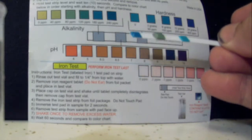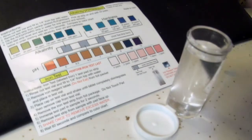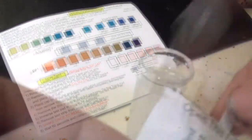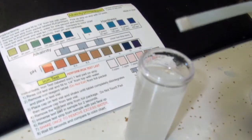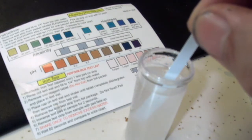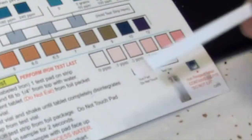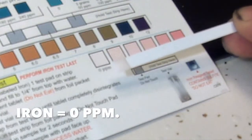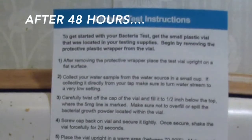Next up is the iron test. You drop in the little reagent tablet, cap the vial and give it a good shake to dissolve the reagent. Once it's totally dissolved then you'll take your test strip, take it out and read it off the scale. In my case I'm iron free.